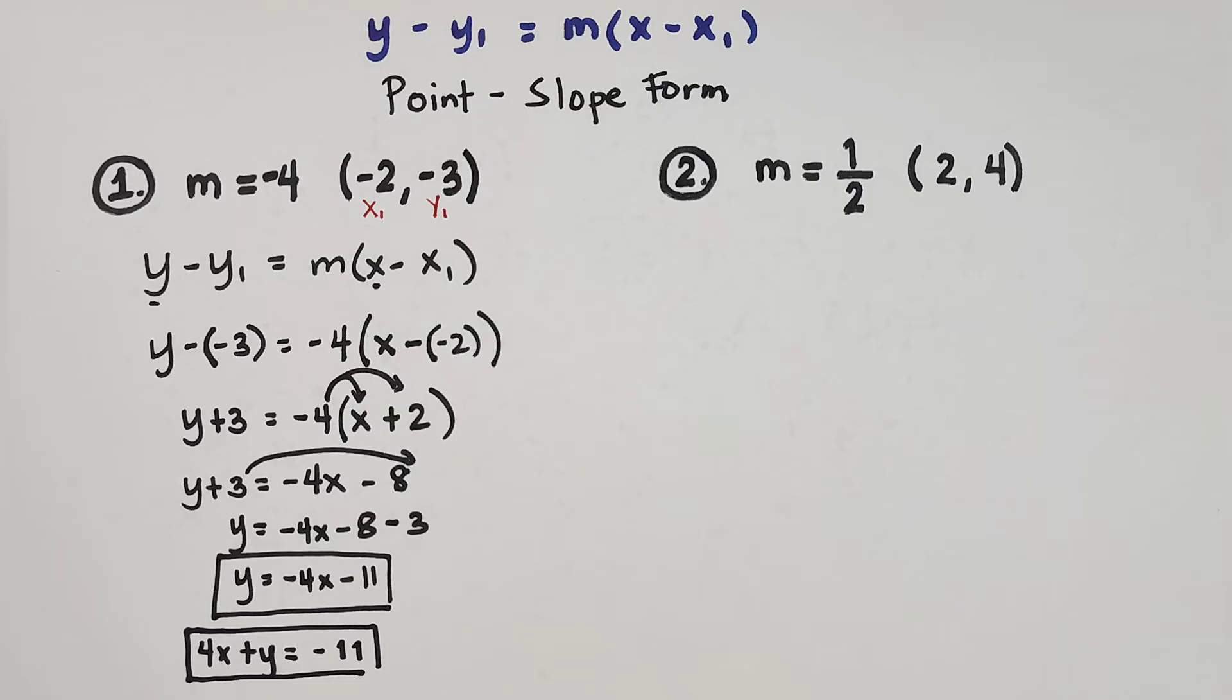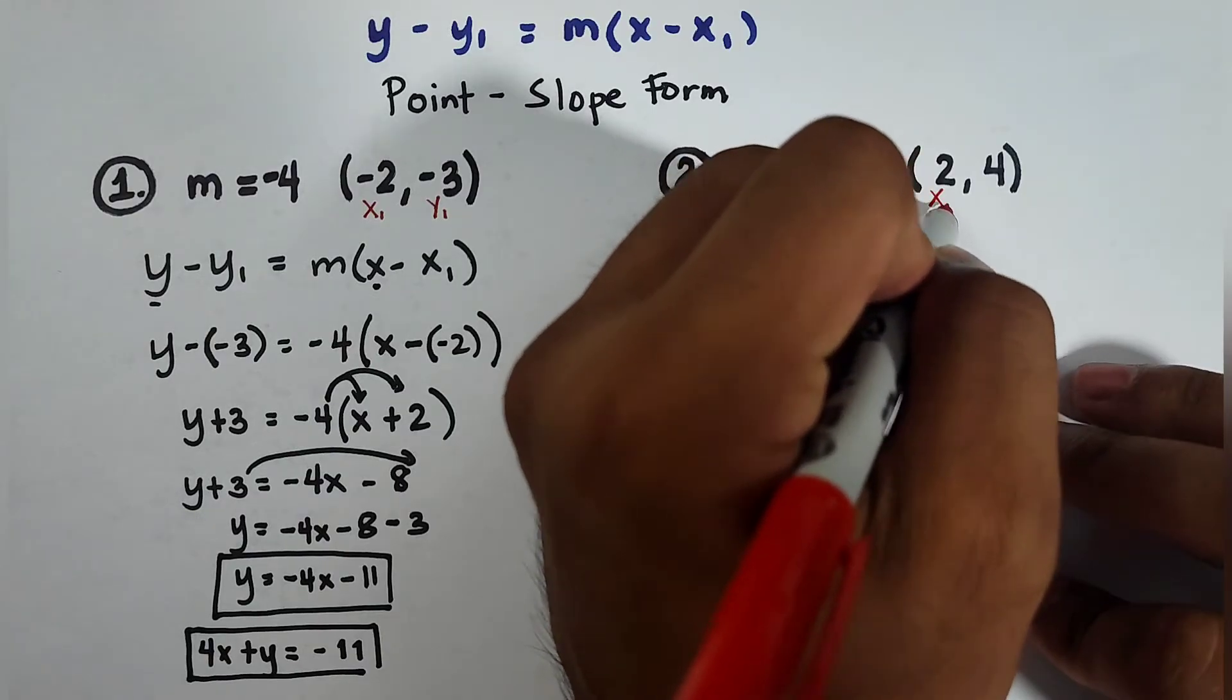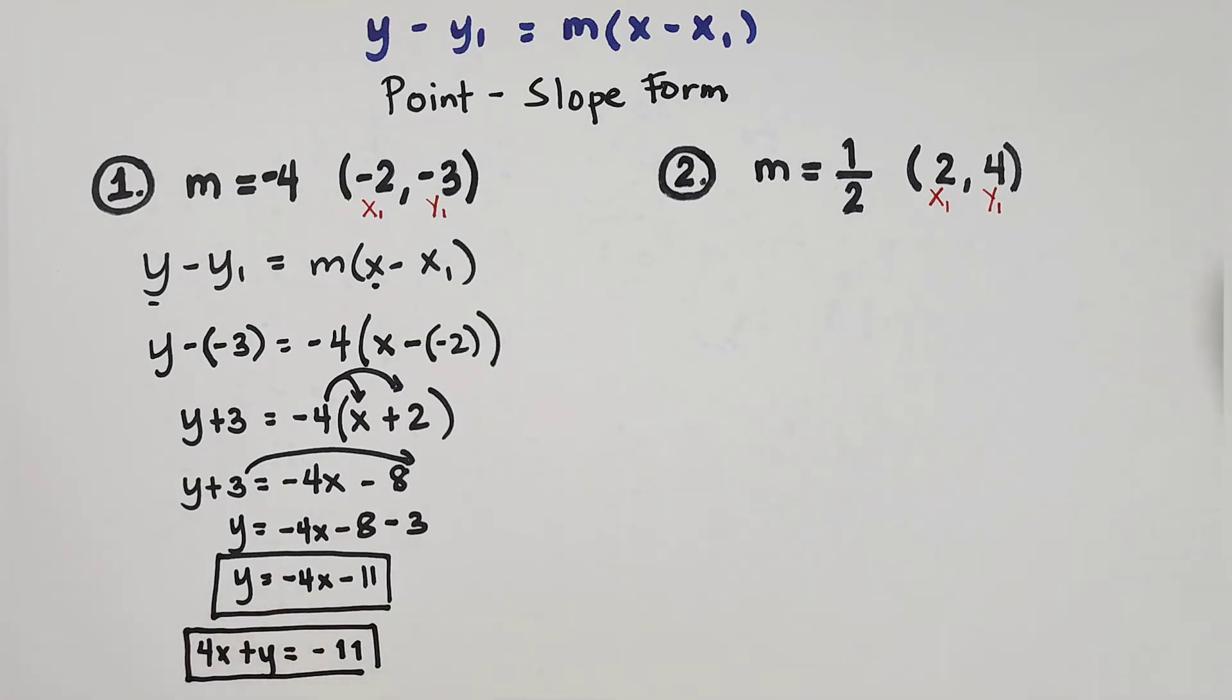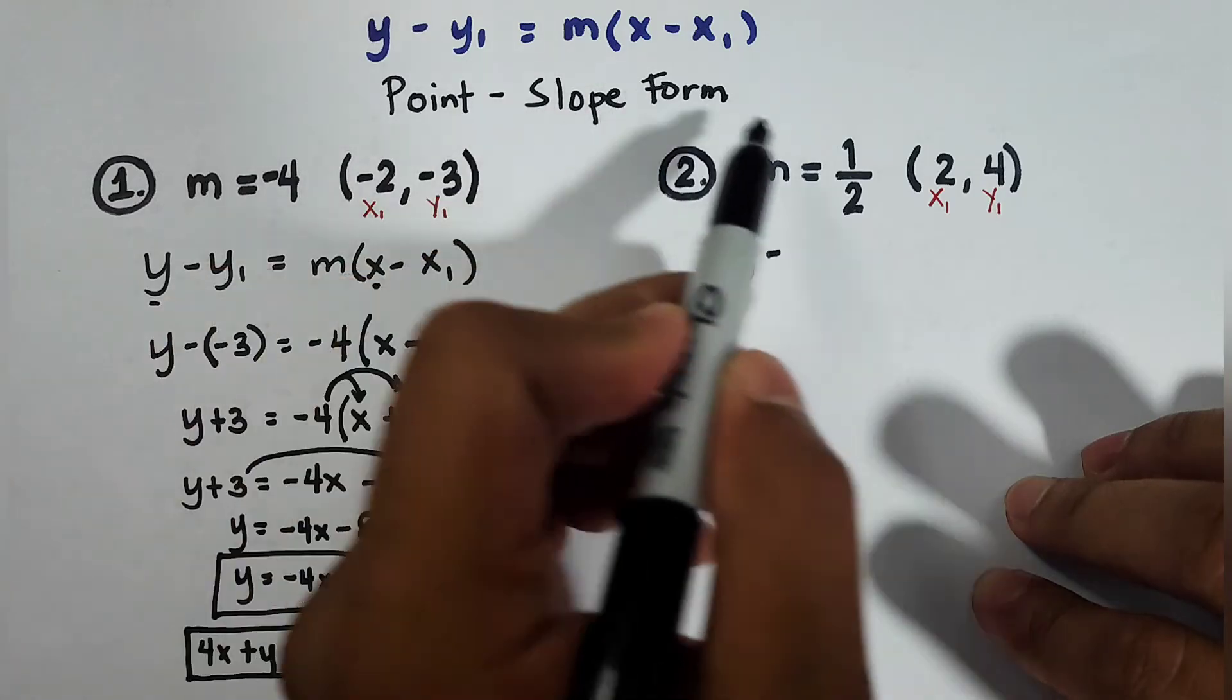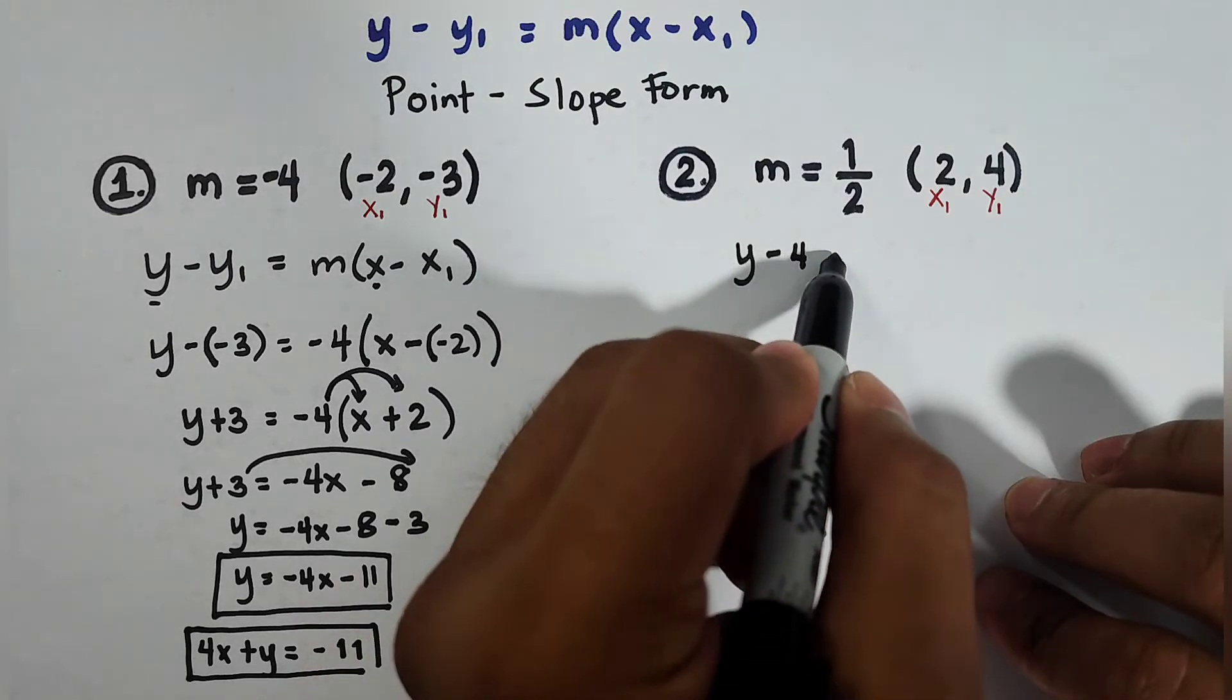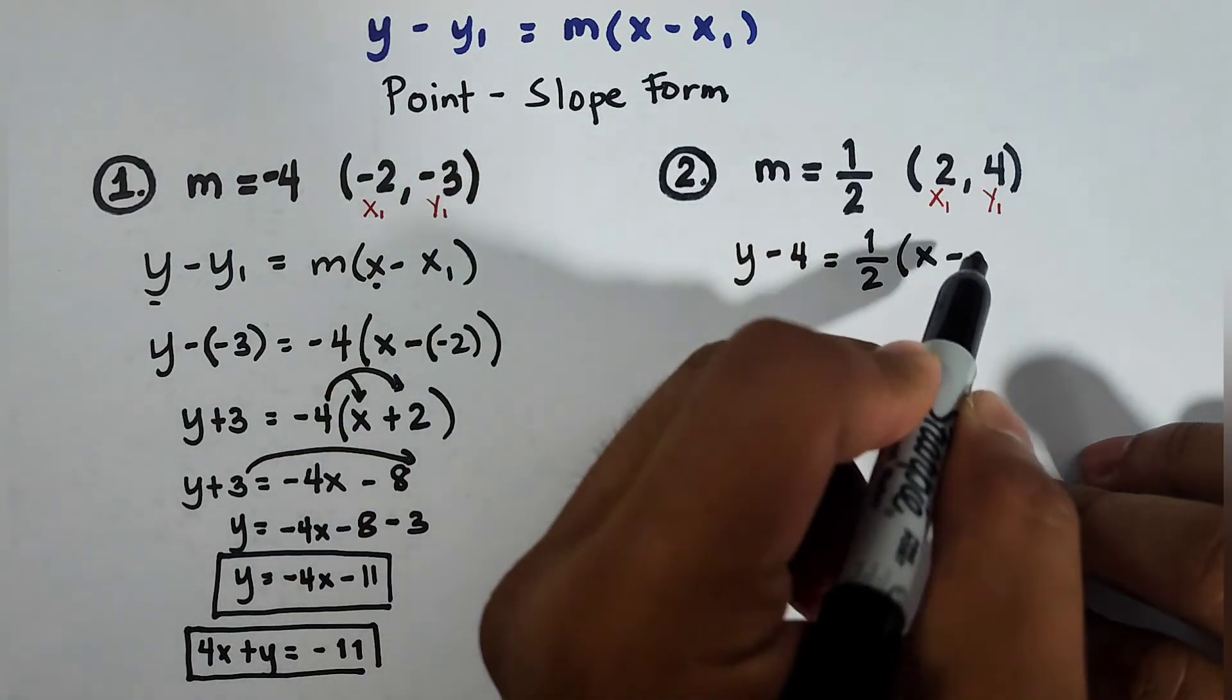For number 2, your m is a fraction, but don't worry. Then the coordinates of the point is 2 and 4. This is your x sub 1. And this is your y sub 1. So using the formula, let us substitute directly. So y, copy y, minus your y sub 1 is 4. Since that is positive, simply put 4. It's equal to 1 half times x minus your x sub 1, which is equal to 2.